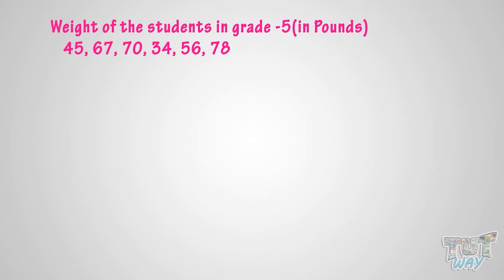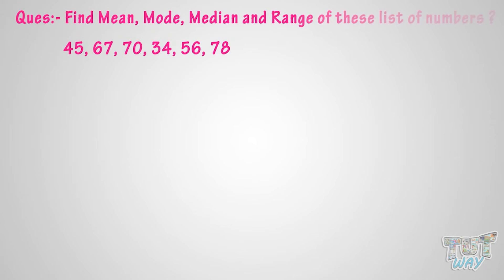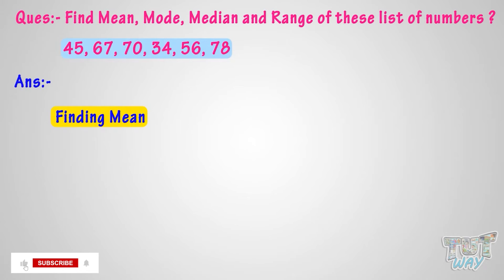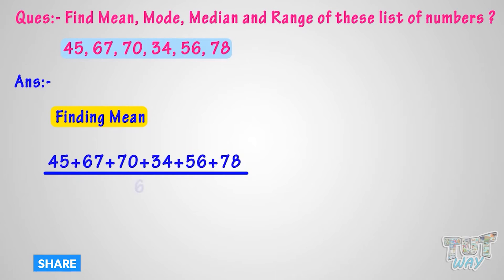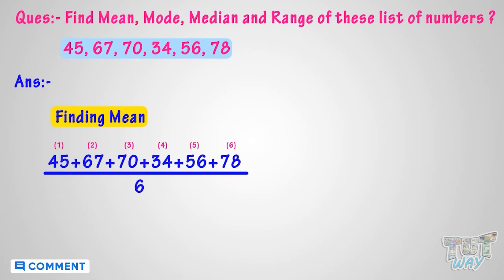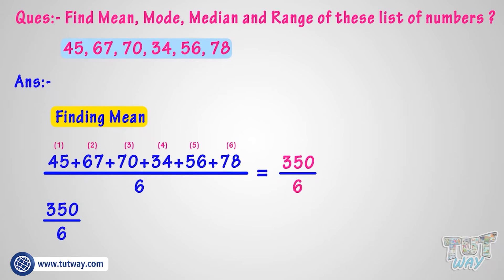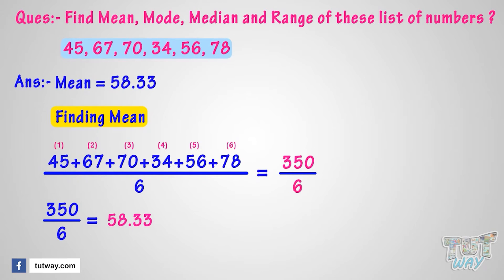The weight of students in grade 5 in pounds is given. We have to find mean, mode, median, and range for this list of numbers. First, let's find the mean. Mean is the average, so we add all the numbers and divide by 6, as the total number of students is 6. Adding all the numbers, we get 350. Dividing 350 by 6, we get 58.33. So the mean is 58.33.